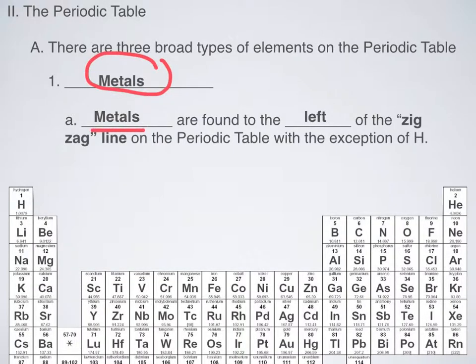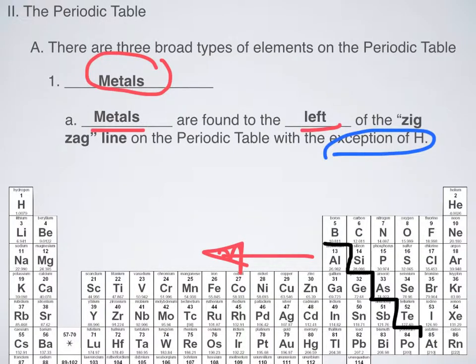Metals are found to the left of the zigzag line on the periodic table. Take out your periodic table and I'm going to draw the zigzag line on this slide. You start at boron and sort of zigzag your way like a stepladder all the way down. So when we say to the left of the zigzag line, we mean to the left of this line. Now, the only major exception, which you might want to underline, is hydrogen. Hydrogen all the way over here in the corner is not an example of a metal, but practically everything else to the left is.